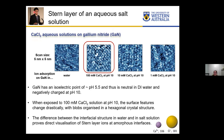Gallium nitride is a very hard and mechanically stable semiconductor surface. In air, it usually forms an amorphous oxidized layer on top. Our imaging is on top of this oxidized amorphous layer. Gallium nitride has an isoelectric point of pH 5.5, so it is neutral in DI water and negatively charged at pH 10. In DI water, we can see from the AFM image that there is no ordered structure, which is consistent with the amorphous surface underneath.